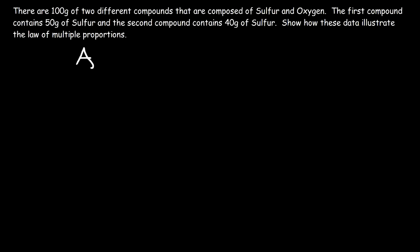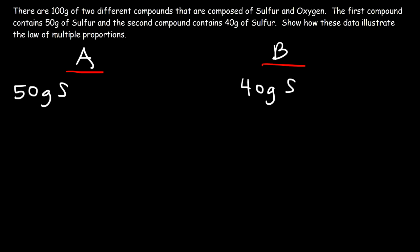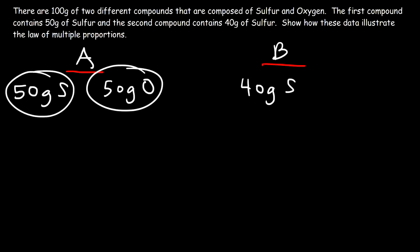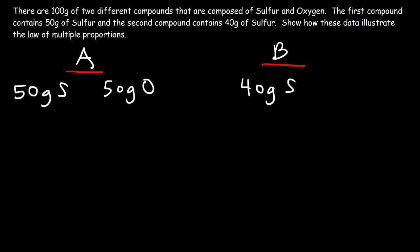Show how these data illustrate the law of multiple proportions. Let's call the first compound A and the second compound B. Compound A contains 50 grams of sulfur and compound B contains 40 grams of sulfur. The total mass of each compound is 100 grams. For compound A, if we have 100 grams total and 50 grams is sulfur, the other 50 grams is oxygen.